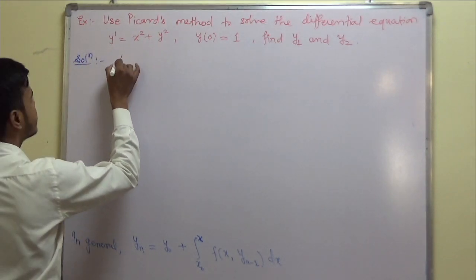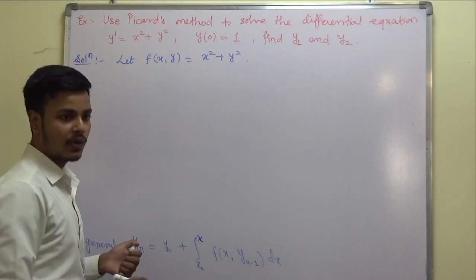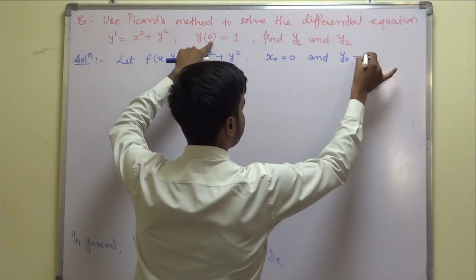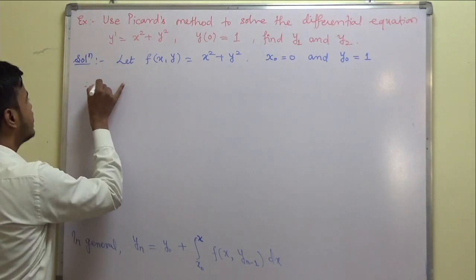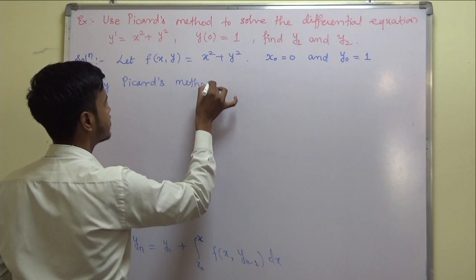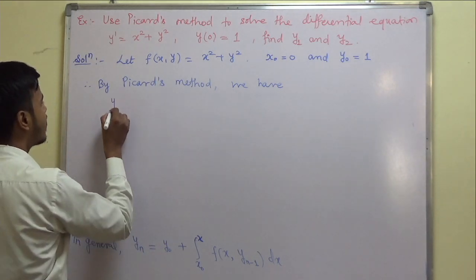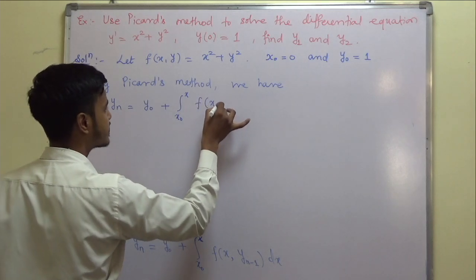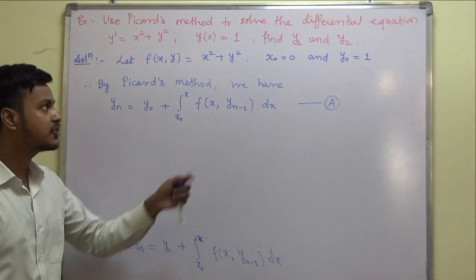What is given to us? We have f(x, y) = x² + y², x₀ = 0, and y₀ = 1. By Picard's method, y_n = y₀ + ∫[x₀ to x] f(x, y_{n−1}) dx — call this equation A. Since we want y₁ and y₂, for y₁ we substitute n = 1, which requires f(x, y₀).